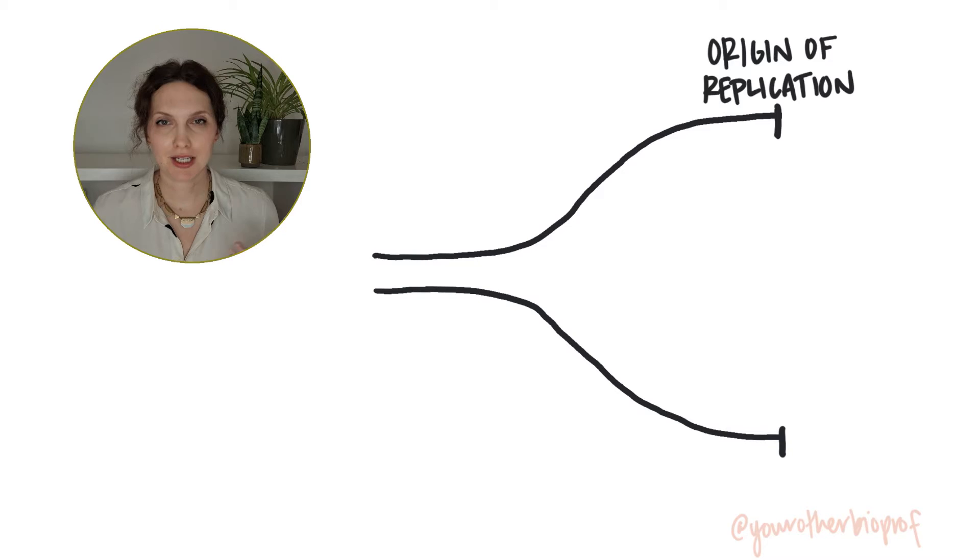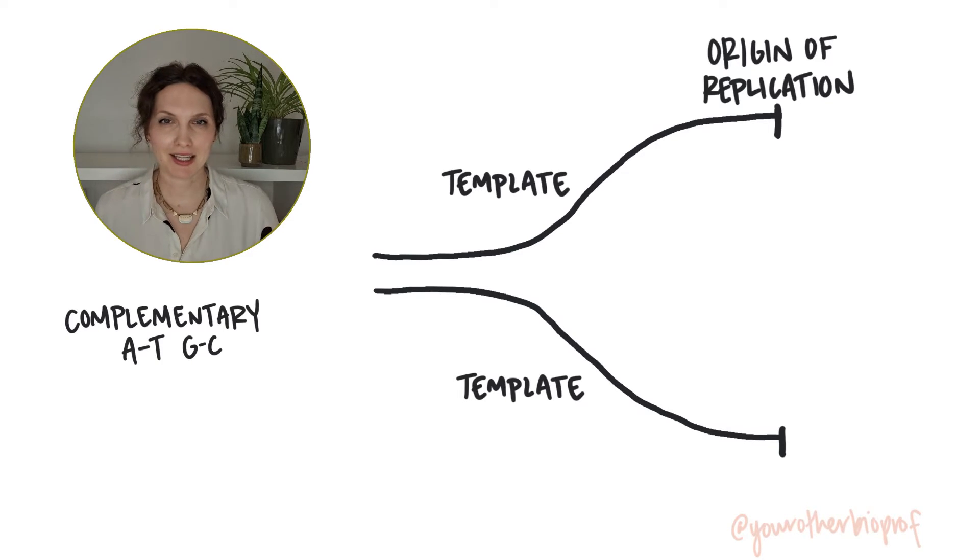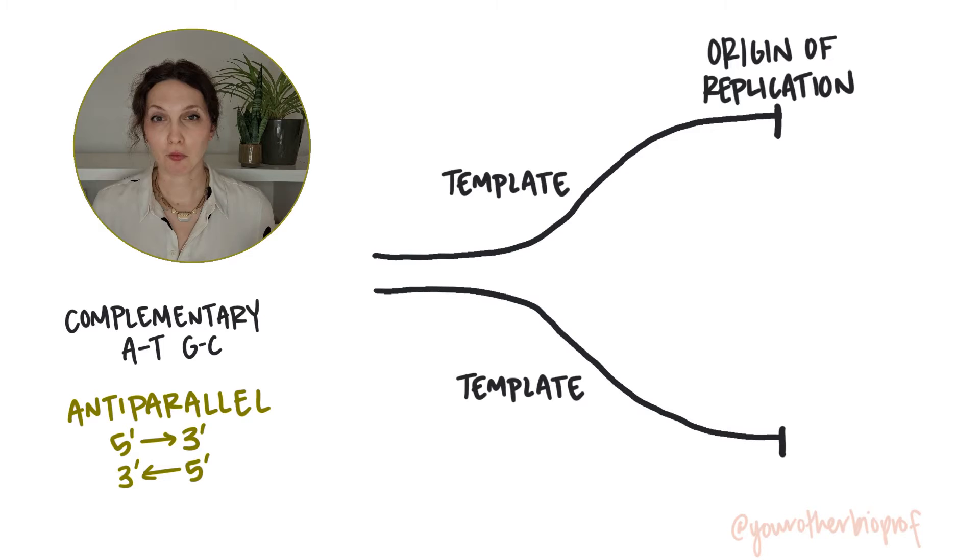On the replication fork, the two DNA strands on the outside are going to be used as the template strands for DNA replication. Now these strands have directionality, a five prime end and a three prime end, and if that's a little confusing to you, I've got a quick video that clears that all up. Hopefully you remember that paired DNA strands are not just complementary, meaning A pairs with T, G pairs with C, but they're also anti-parallel, which means if one strand runs five prime to three prime in one direction, the paired up strand runs five prime to three prime in the opposite direction.